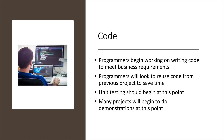The next step is the coding phase, which is the phase we usually associate with software development. Programmers will begin writing code to meet specific business requirements. The code is highly targeted to meet specific requirements generated from the earlier steps. Programmers will also look to reuse code from previous projects to save time. Unit testing will begin at this point — as programmers write individual pieces of code, they will build automated tests to make sure the system is functioning as expected, layering these tests from the bottom up. Many projects will also begin demonstrations to customers at this point to make sure the software is meeting their needs and that nothing is overlooked.